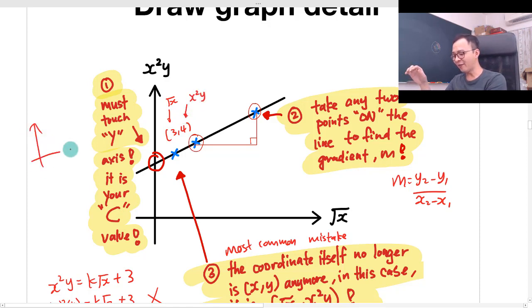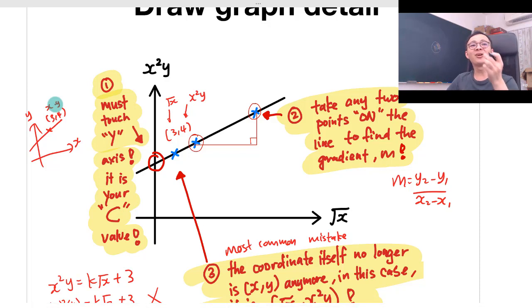Unless you have a diagram which is X and Y and then you have a coordinate (3, 4), then it makes sense. The 3 is X, Y is 4. But in linear law, the coordinate inside the diagram is no longer X and Y.